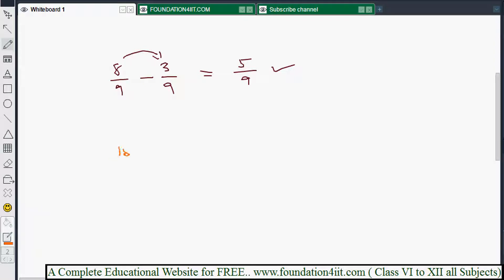15 by 24 is one fraction minus 3 by 24 is another fraction. Now denominators are the same, so the denominator as is you'll write. You can keep it directly. Now we need to subtract the numerators.